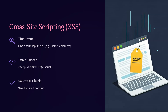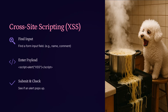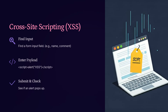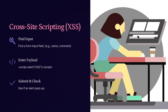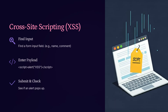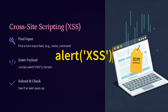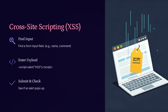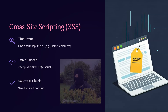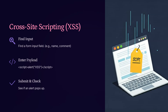Let's talk about cross-site scripting, commonly known as XSS. This is one of the most common and powerful web vulnerabilities. To test for XSS, the first step is to find an input field on a website — this could be a form field like name, comment, search, or even a feedback box. Once you find an input field, enter a script payload, for example: open script tag, alert, open parenthesis, quote, XSS, quote, close parenthesis, and close the script tag. Submit the form and see what happens. If an alert box pops up with the message XSS, it means the site is vulnerable to cross-site scripting. This simple test helps you understand how unfiltered input can lead to script injection and why input validation is so important.